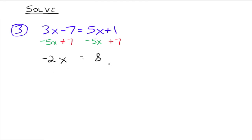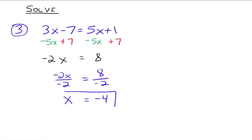To undo the multiplication we divide both sides by negative 2. The left side gives x, since negative 2 divided by negative 2 is 1, and the right side gives negative 4. So x equals negative 4. You can check by plugging negative 4 in for x in both sides to see if you get a true statement. The idea is: first move things left or right by adding or subtracting to both sides to get all variable terms on one side and all constant terms on the other.